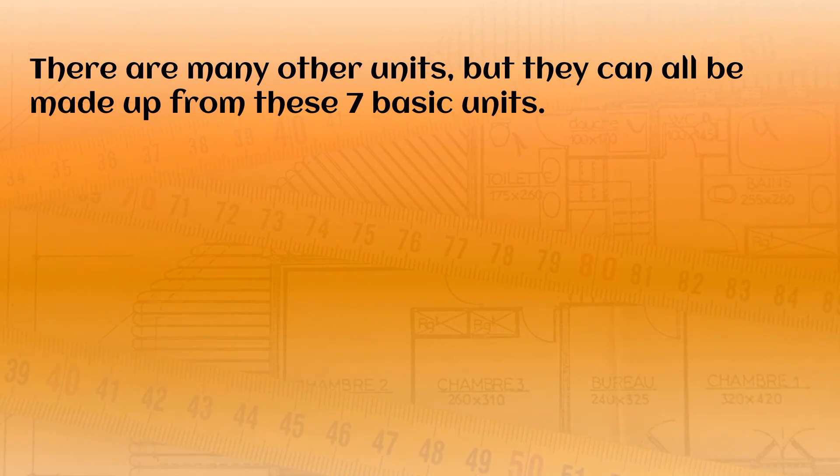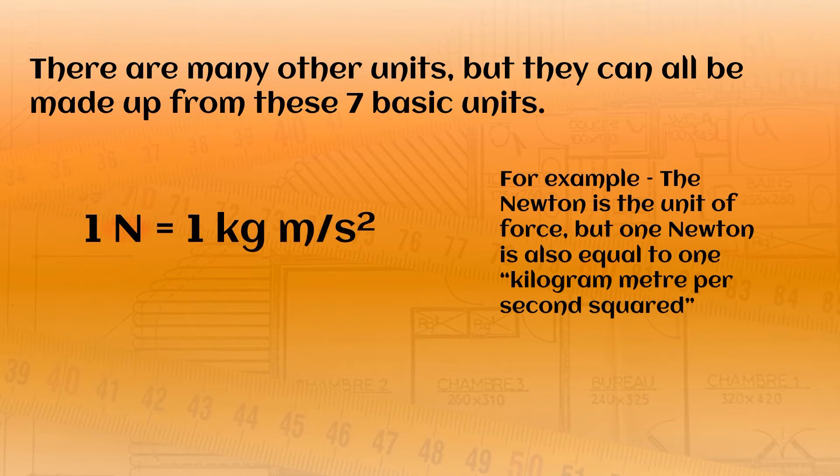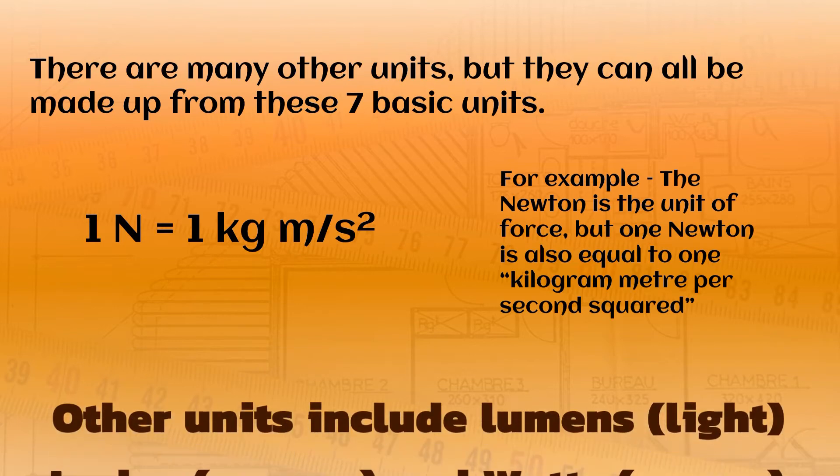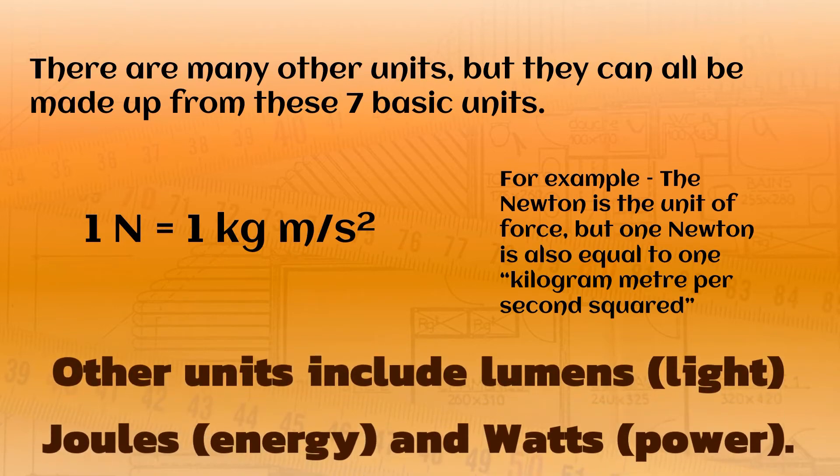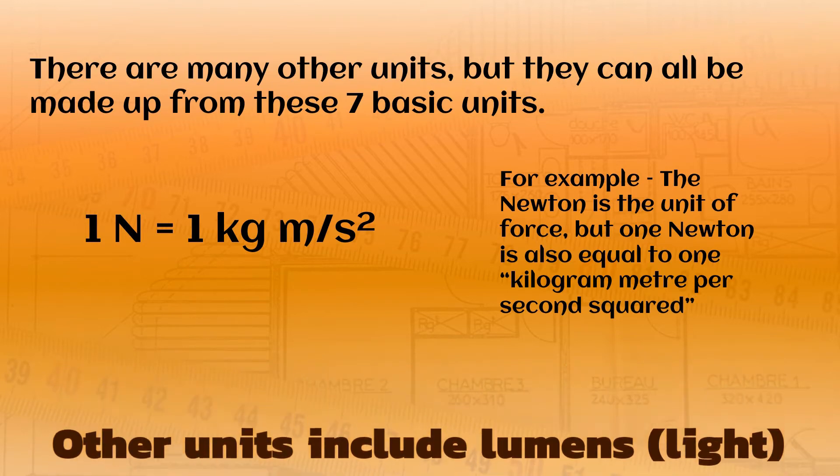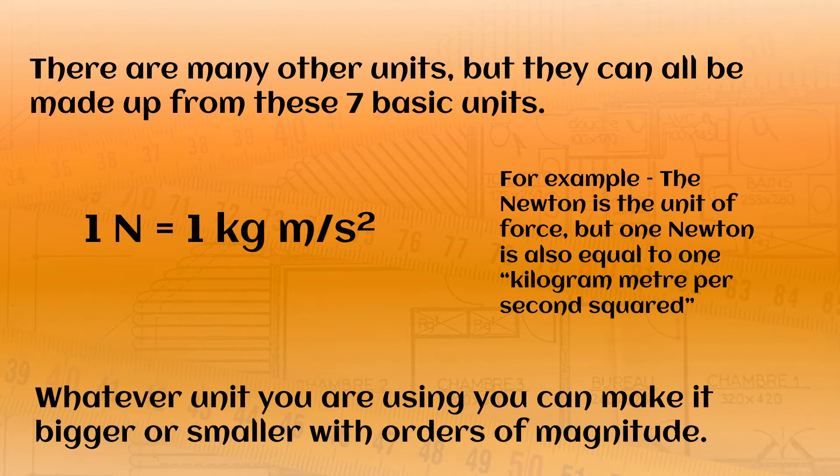There are many other units that we use, but they can all be made up from these seven basic units. For example, you might have heard of the Newton as a unit of force, but one Newton is also equal to one kilogram meter per square second. And kilograms, meters and seconds are all basic SI units. Whatever unit you are using, you can make that number bigger or smaller with orders of magnitude. That's what we're going to look at next.